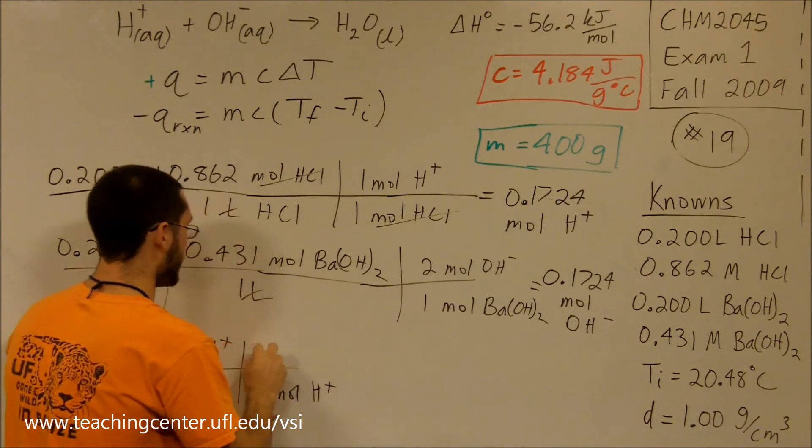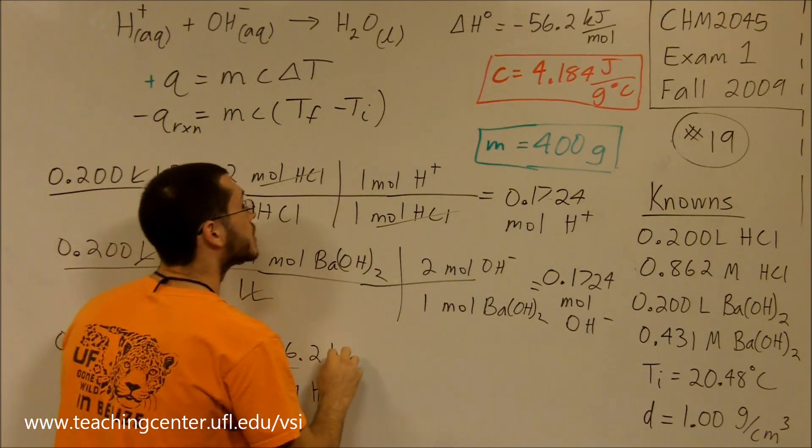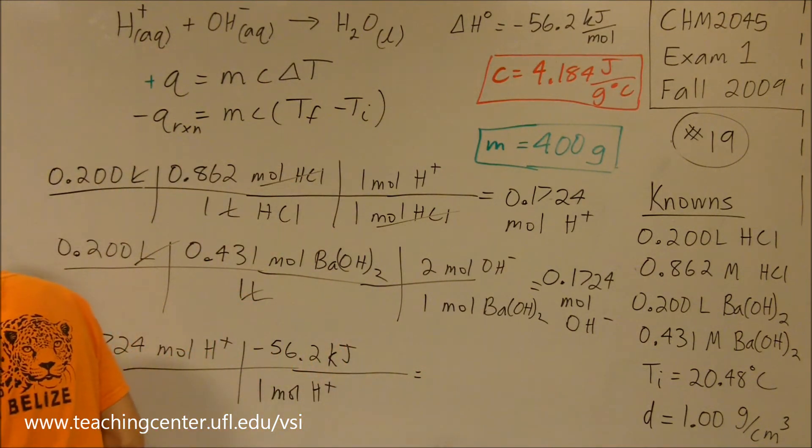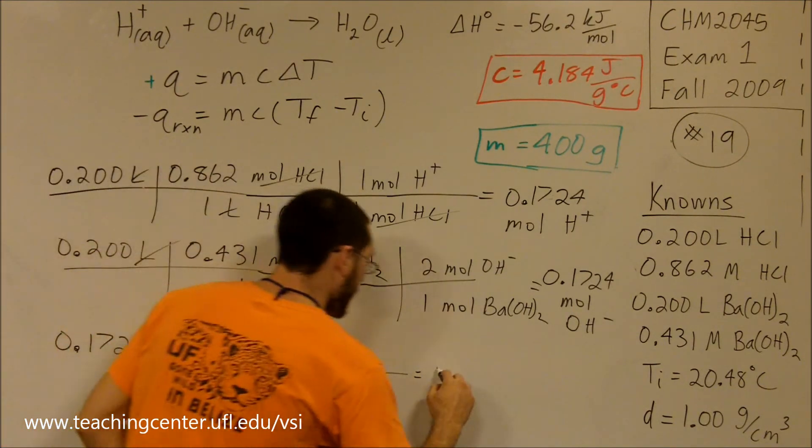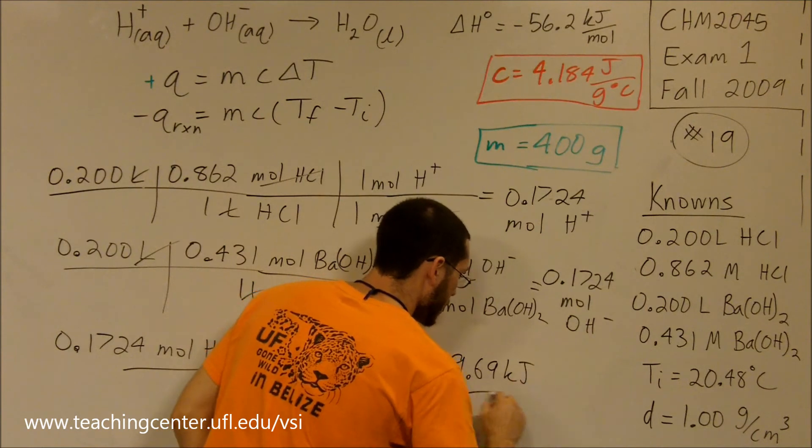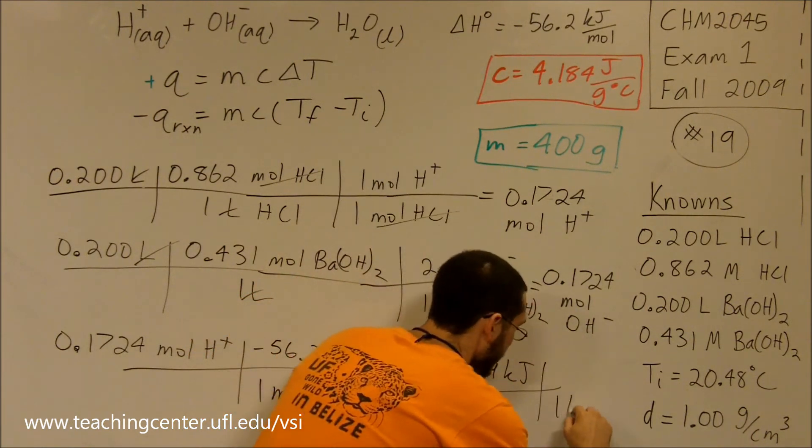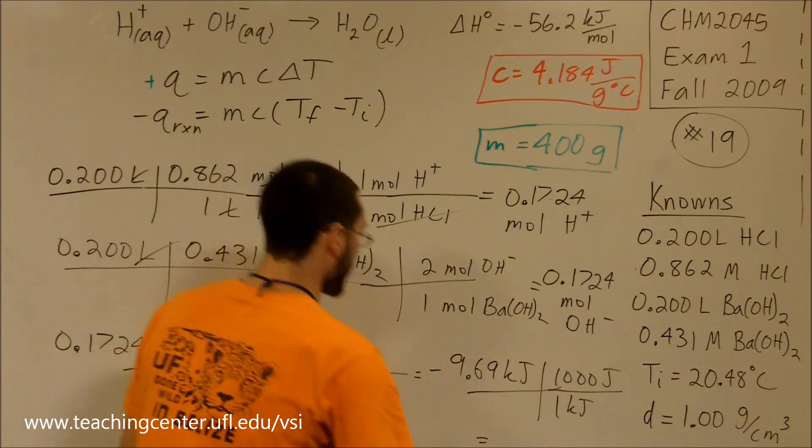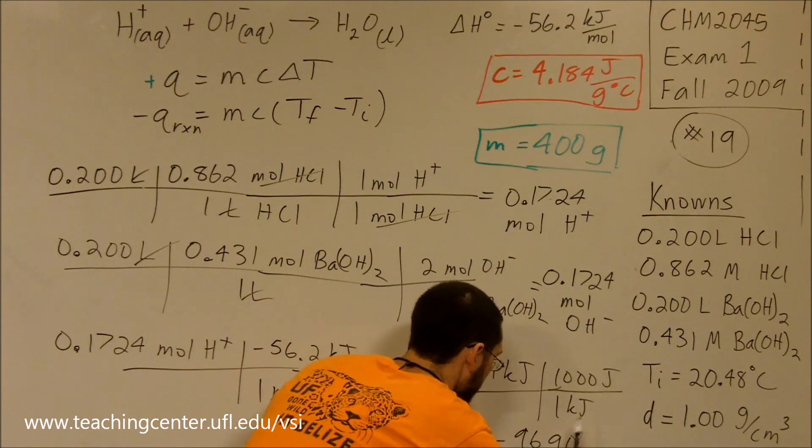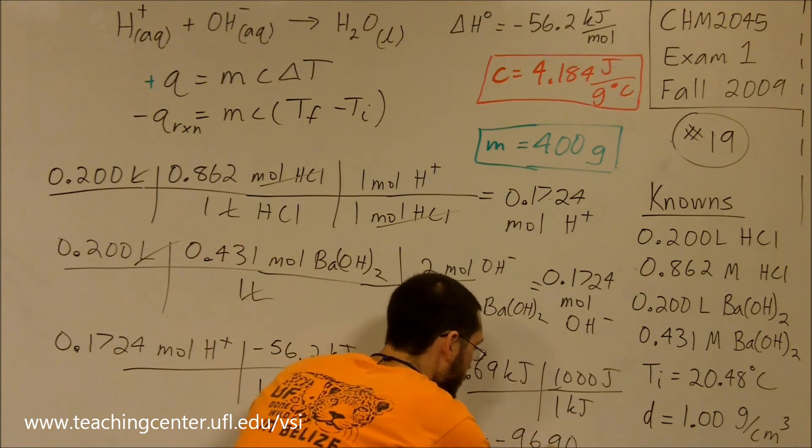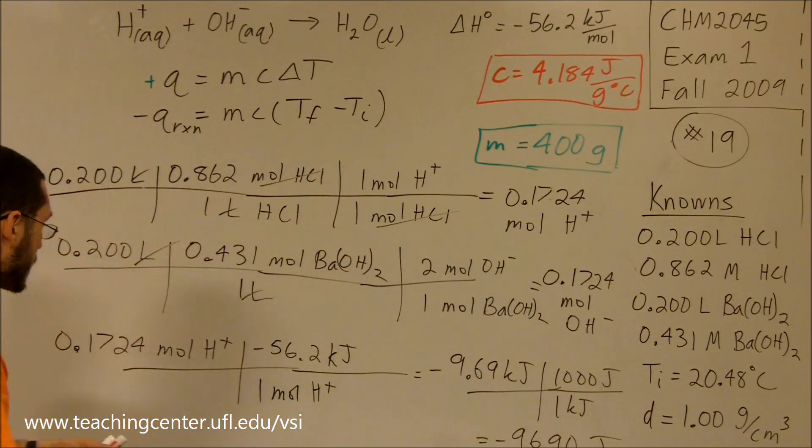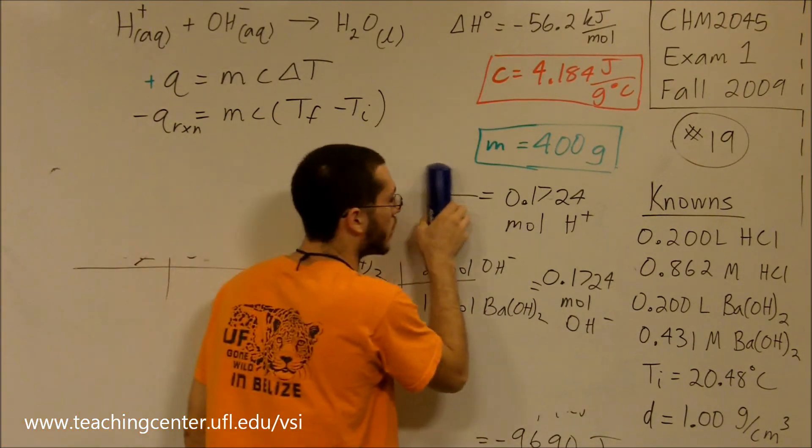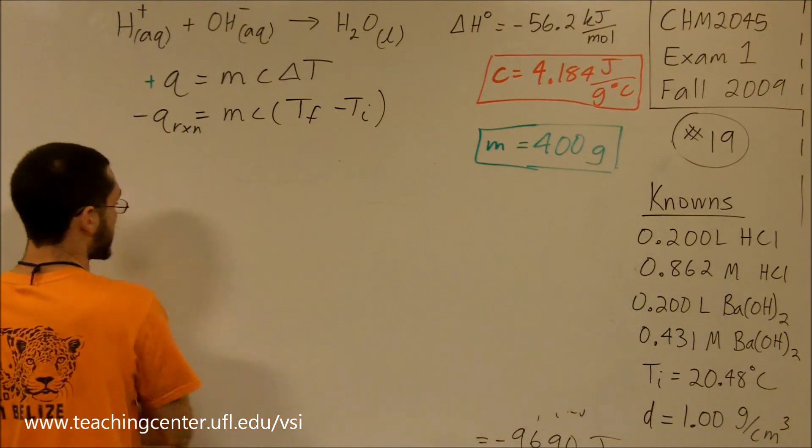For every one mole of H⁺, it gives off minus 56.2 kilojoules of energy. This number comes out to be minus 9.69 kilojoules. Converting to joules, knowing that one kilojoule equals 1,000 joules, we get minus 9,690 joules of energy. That's how much heat was released when the two solutions came together. That's going to be our Q.